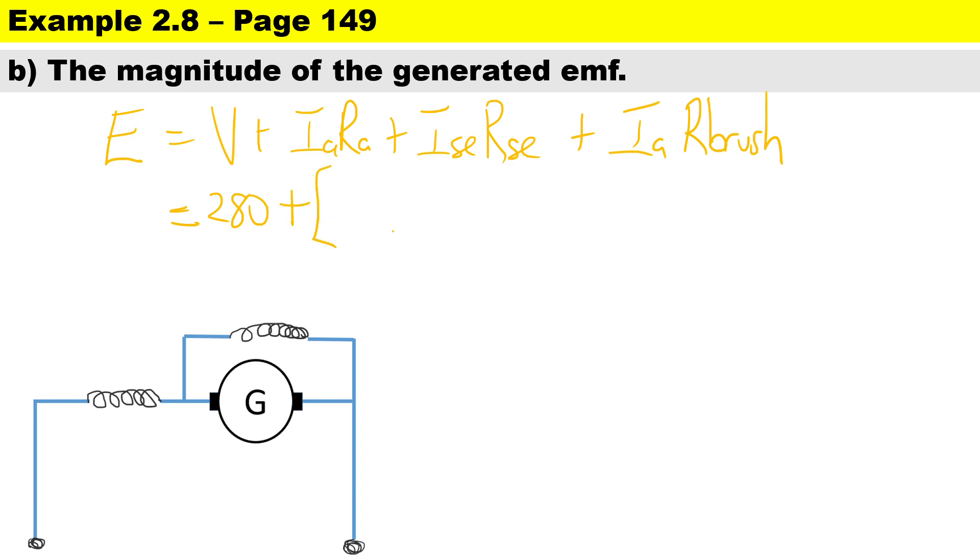To calculate the volt drop across the armature, we're going to take the armature current of 37.521, multiply by the armature resistance of 0.2. Then the volt drop across the series winding: the supply current and series current is the same, it is 35.714 multiplied by the series resistor which is 0.25.